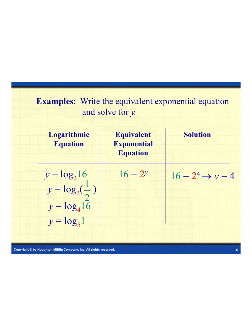Let's look at that property a few more times. For the first example, we have log base 2 of 16 equals y. We want to rewrite this as an exponential function. I take my y value and the value I'm evaluating and switch places — the log cancels out. I now have 16 equals 2 to the y power, because y becomes the exponent and it equals the value I was looking at.